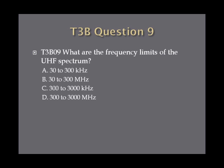Question 9. What are the frequency limits of the UHF spectrum? A, 30 to 300 kilohertz. B, 30 to 300 megahertz. C, 300 to 3,000 kilohertz. Or D, 300 to 3,000 megahertz.